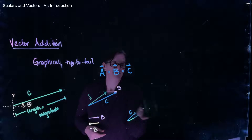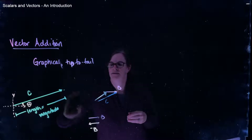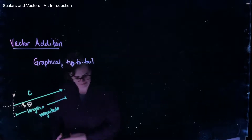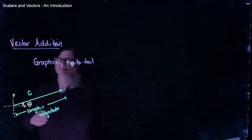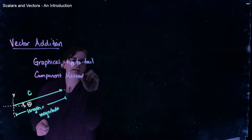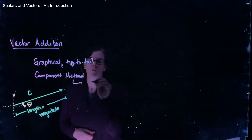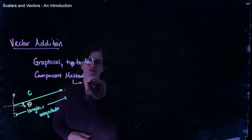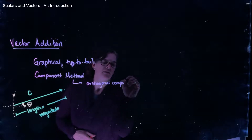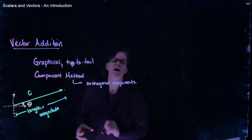The second method of vector addition or subtraction is what we call the component method, also known as the algebraic method. The component method is when we recognize that vectors can be broken down into their orthogonal components. So the first thing we do in the component method is get the vectors into their orthogonal components.